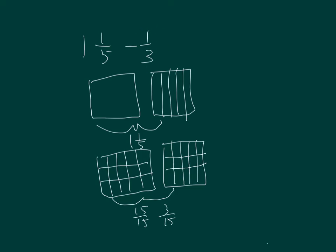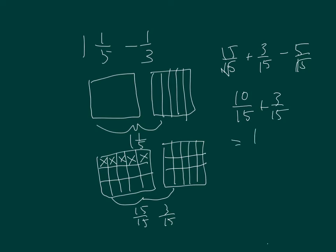Minus one-third. Take off one-third — that's one-third, which was five-fifteenths. So that was fifteen-fifteenths plus three-fifteenths, minus five-fifteenths. So we go fifteen-fifteenths minus five-fifteenths, which is ten-fifteenths, plus three-fifteenths, equaling thirteen-fifteenths. We count it here: one, two, three, four, five, six, seven, eight, nine, ten, eleven, twelve, thirteen-fifteenths.